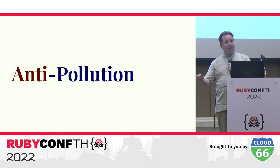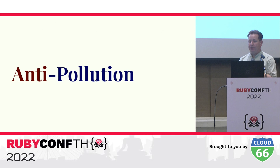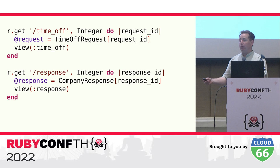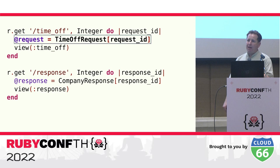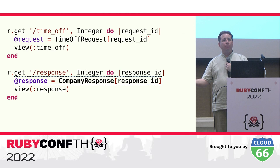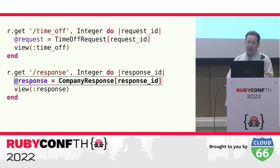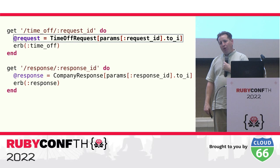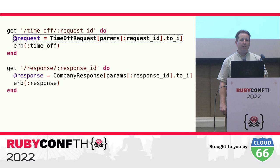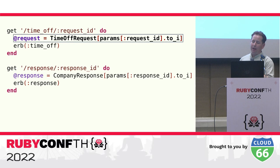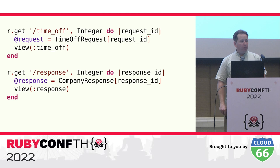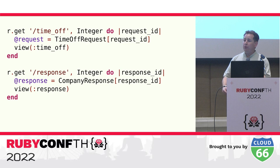Another way Roda increases reliability is to avoid polluting the scope of your application with instance variables and methods that the user might want to use. Roda believes you should be able to use the instance variables and methods that you want. For example, one of my production applications deals with requests for time off — it's natural to store a time off request in an instance variable named 'request' and a company response in an instance variable named 'response', and this works just fine in Roda.